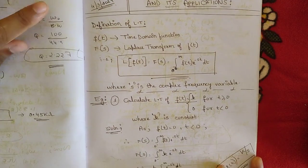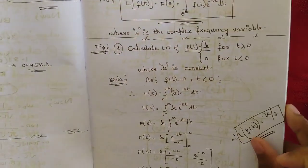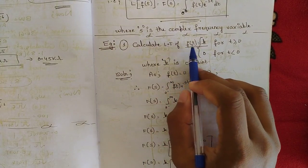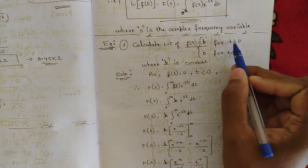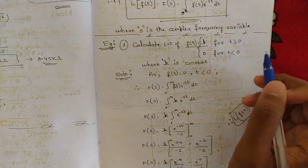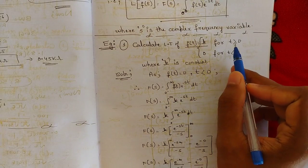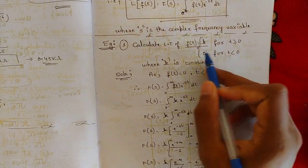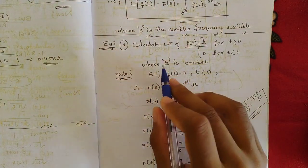Next, let us see a small example to illustrate the Laplace transform. Example: calculate the Laplace transform of f(t) = k when t ≥ 0, and f(t) = 0 for t < 0. That is, f(t) is a constant value for all values of t greater than or equal to 0, and it is 0 for all negative values of t, where k is a constant.